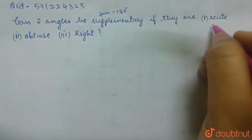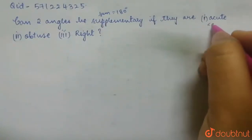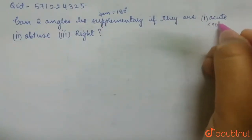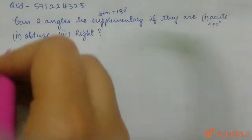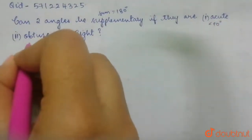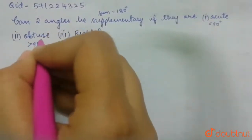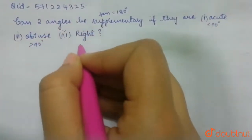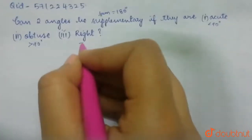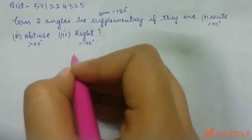Acute angles are the ones whose angle is less than 90 degrees. Obtuse angles are the ones whose angle is greater than 90 degrees. Right angles are the ones whose angle is equal to 90 degrees.